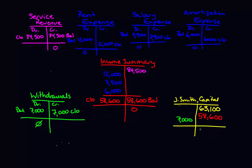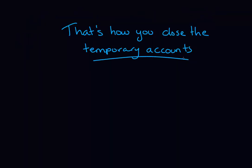Adding in the previous capital balance of $63,100 from the trial balance, plus the income summary closed for $58,600 credit, minus the withdrawals closed for $7,000 debit, gives us a new capital account balance of $114,700 credit. If you have a statement of owner's equity for your company, this should be your closing balance — if it's not, you probably have done something wrong. And that's how you close the temporary accounts. Thanks for watching, everyone.